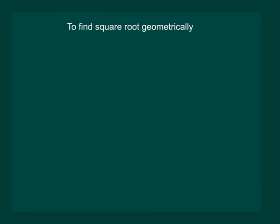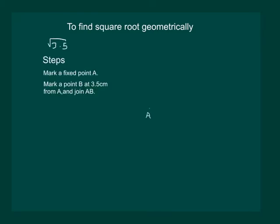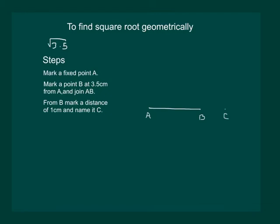We have already learnt to find the square root of a number using the long division method. Here let us try to find the square root geometrically. Say we have to find the square root of 3.5 geometrically. To start with, we mark a point A. Then we mark a point B at 3.5 cm from A and join AB. The next step is that from B, mark a distance of 1 cm and name the point as C.